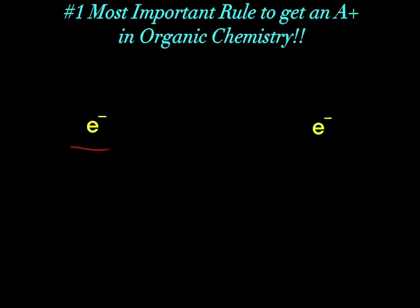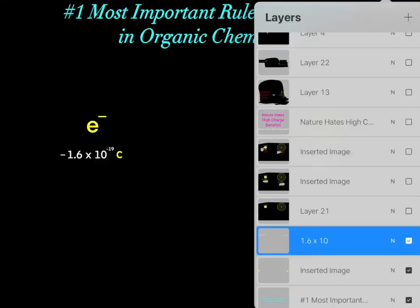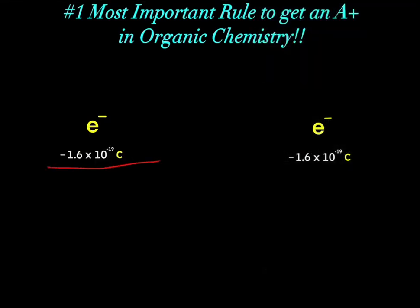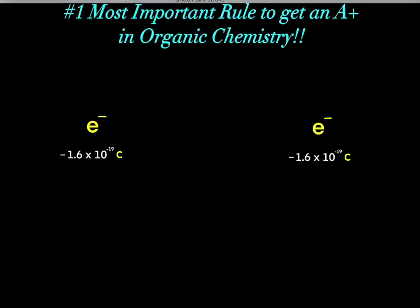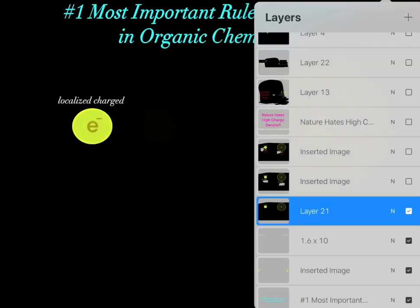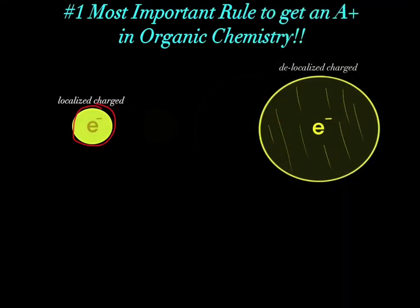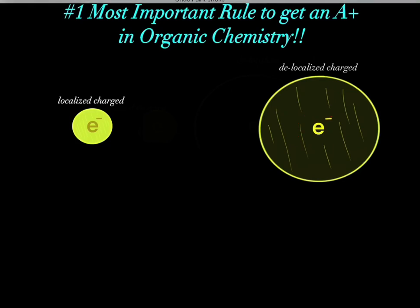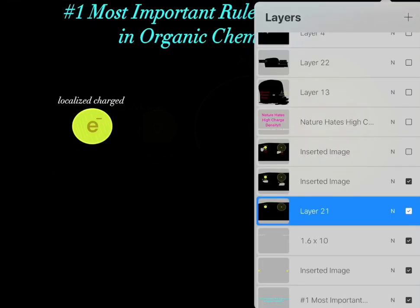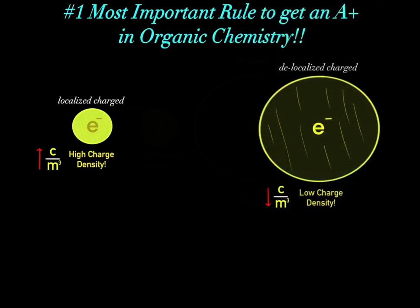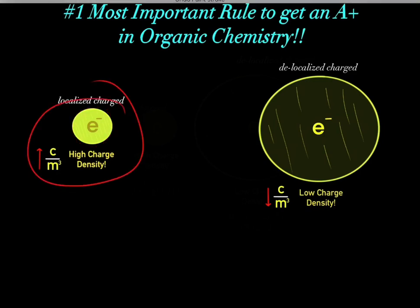Let's imagine we have two electrons. We know electrons have negative charge — every single electron has negative 1.6 times 10 to the negative 19 coulombs. Now let's imagine one electron has all that negative charge localized in a small volume, a small region of space. However, the other electron has all that negative charge delocalized, spread out over a larger volume. The first electron would have a high charge density.